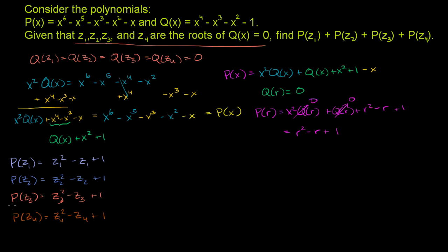We just want the sum of these expressions. We can sum all the 1's to get 4. But we also need to sum all the roots of Q(x), and sum all the squares of the roots of Q(x) — which is not straightforward. This requires knowing the quirky properties of polynomials: specifically, Vieta's formulas for the sum of roots and sum of squares of roots, as covered in the competition math playlist.